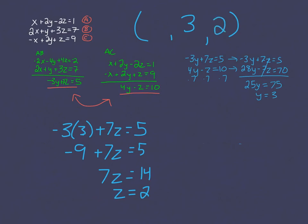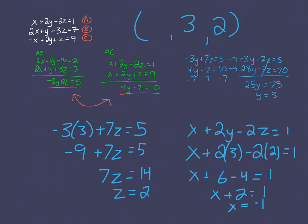Now that I have Z and Y, I need to go back to one of my original three equations, substitute these values in, and solve for X. When I do this, using the top equation, I find that X equals negative one.